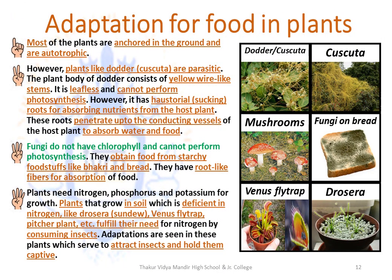Adaptation for food in plants: Most plants are anchored in the ground and are autotrophic — meaning organisms that can make their own food. But there are some plants like Dodder (Cuscuta) which are parasitic — they depend on other plants for their food and require a host. The plant body of Dodder consists of yellow wire-like stems. It is leafless and cannot perform photosynthesis. It has haustorial roots — sucking roots which absorb nutrients from the host plant, penetrating up to the conducting vessels of the host plant to absorb water and food.